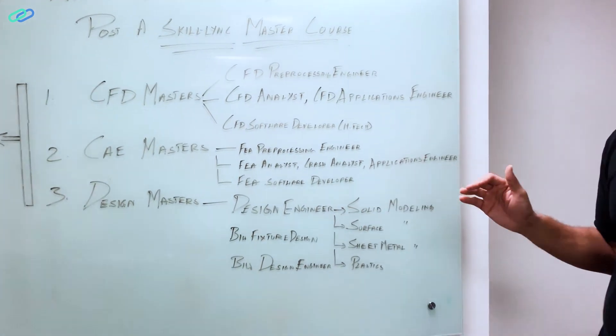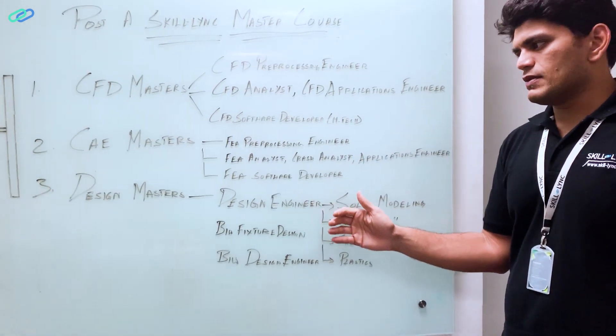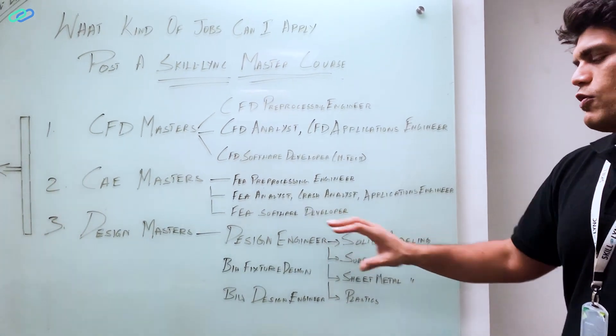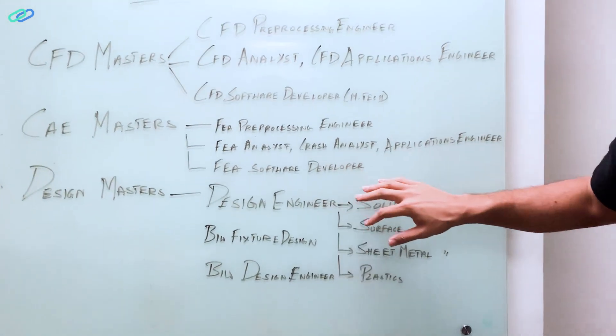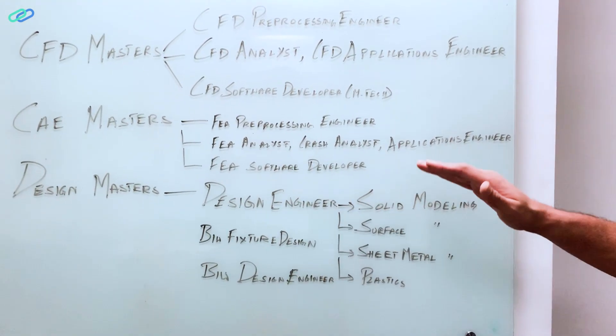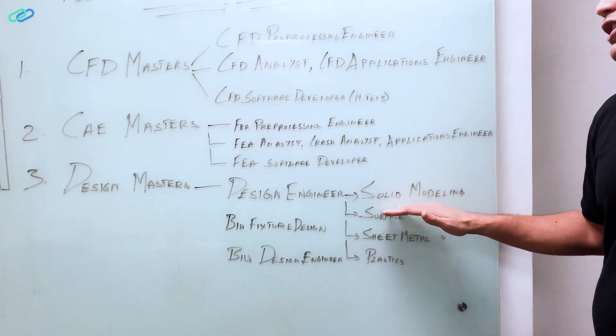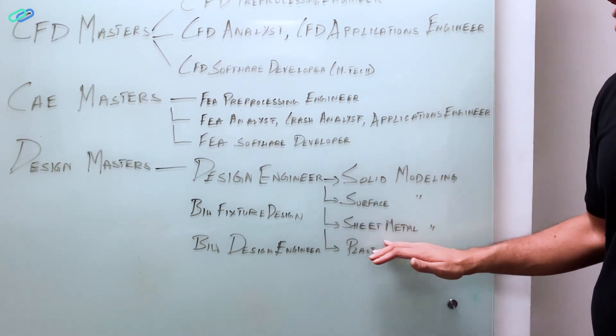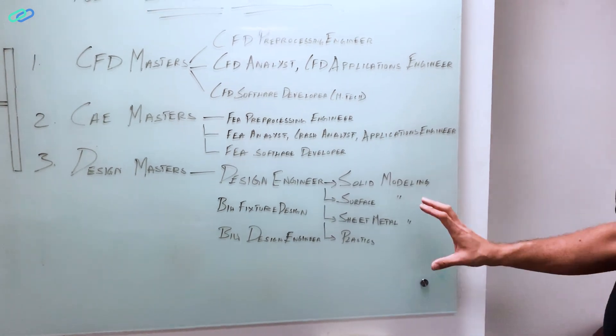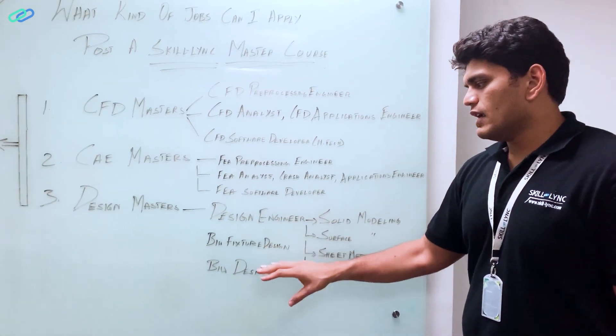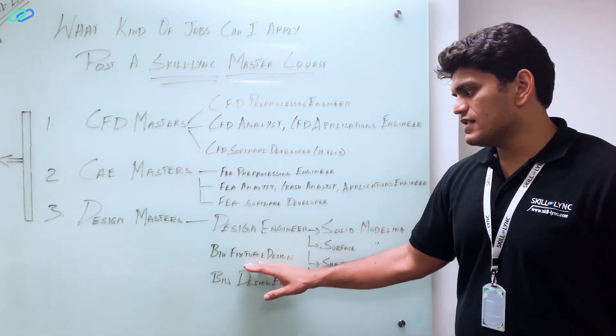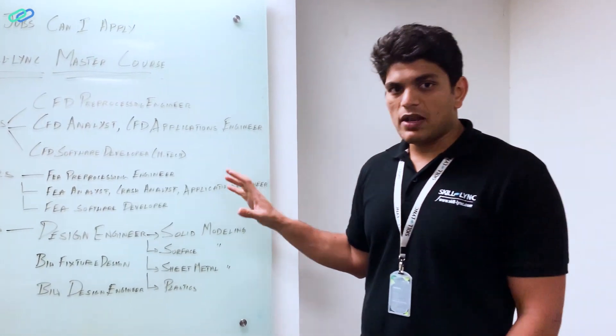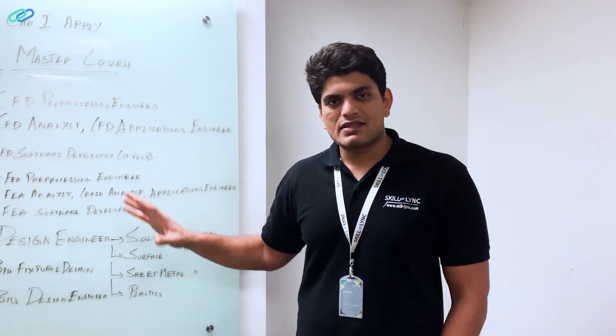So next comes our design domain. If you are taking our SolidWorks master's program or design master's program or BAW fixture design master's program, then what roles you will be getting into is you will get into a basic design engineer role. If you are specialized in solid modeling, you will get into solid modeling-based design engineer. If you are good at surface modeling, you will get into surface modeling-based design engineer, or sheet metal or plastic. So these are the different design engineering domains. If you are mastering in BAW, you can either apply as a BAW fixture design or a BAW design engineer. So these are the different types of roles that you can apply for if you take apart any of our master's program.